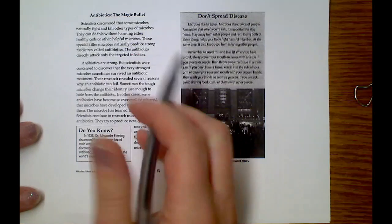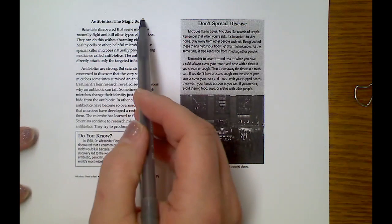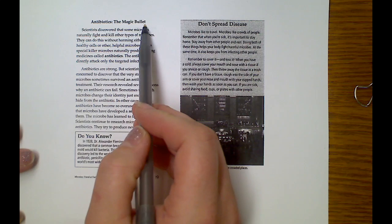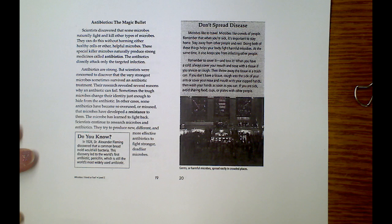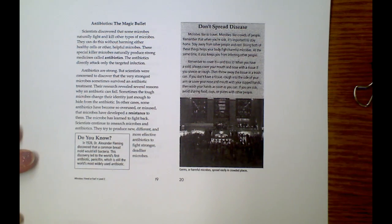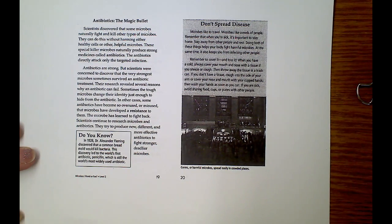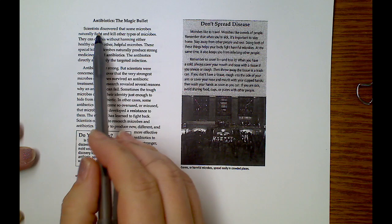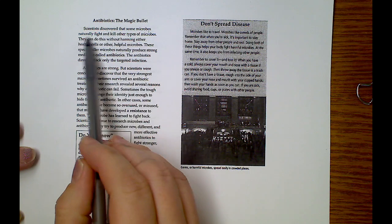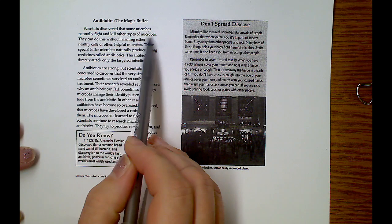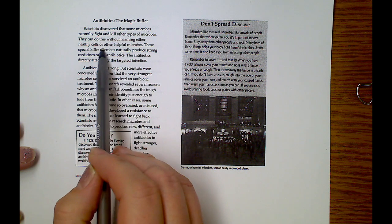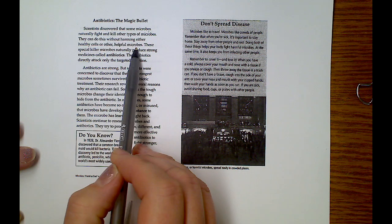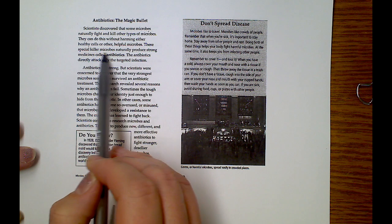Antibiotics: The Magic Bullet. There's a lot of people who don't take antibiotics for lots of reasons. Scientists discovered that some microbes naturally fight and kill other types of microbes. They can do this without harming each other's healthy cells or other helpful microbes.